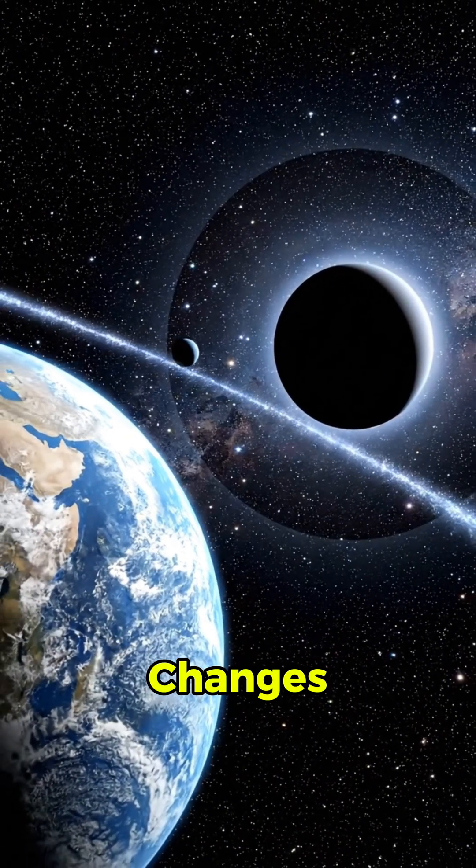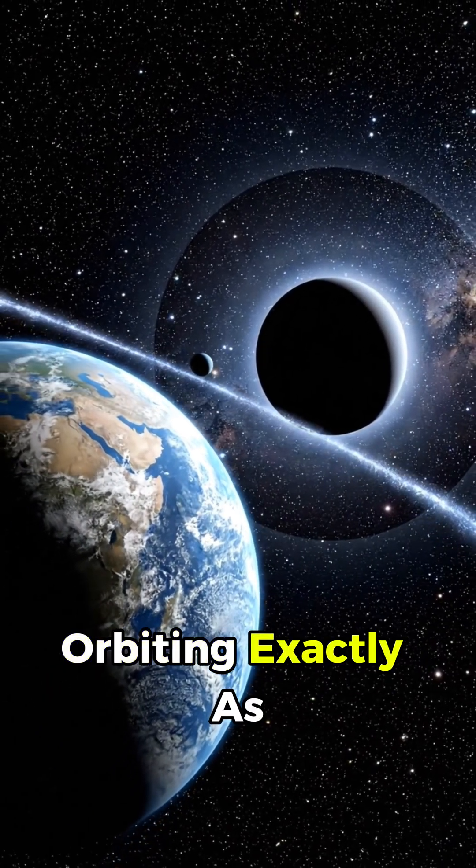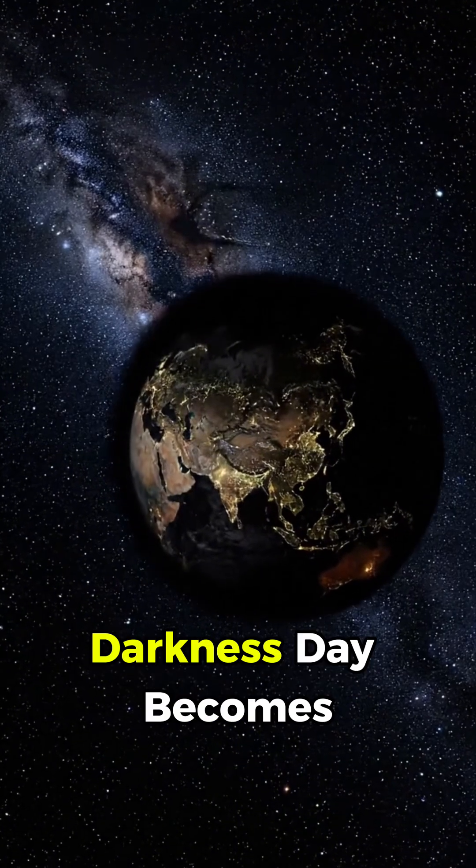At first, nothing changes. The sun's mass stays the same, so Earth keeps orbiting exactly as it does now, only in total darkness.